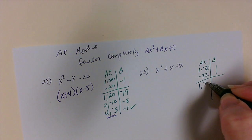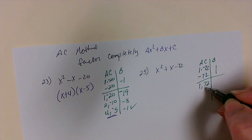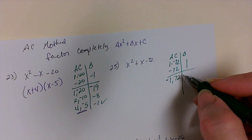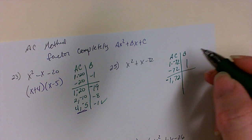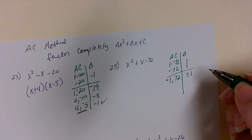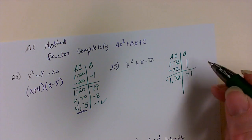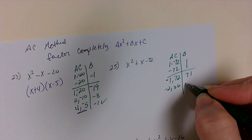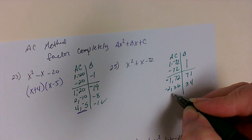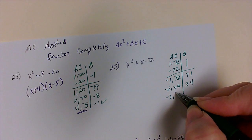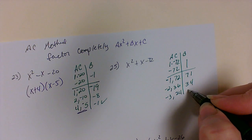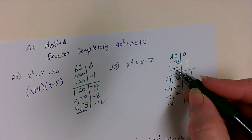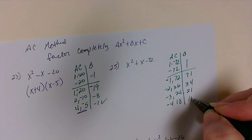So 1 and 72: our b is positive, so the bigger number is positive and we put negative on the 1. Negative 1 times 72 is negative 72; when I add them I get positive 71 — right sign, wrong number. 72 is divisible by 2: negative 2 times 36, add them, get 34. 72 divides by negative 3, giving 24; combine those, get 21. Negative 4 goes into 72 eighteen times; add them, get 14.